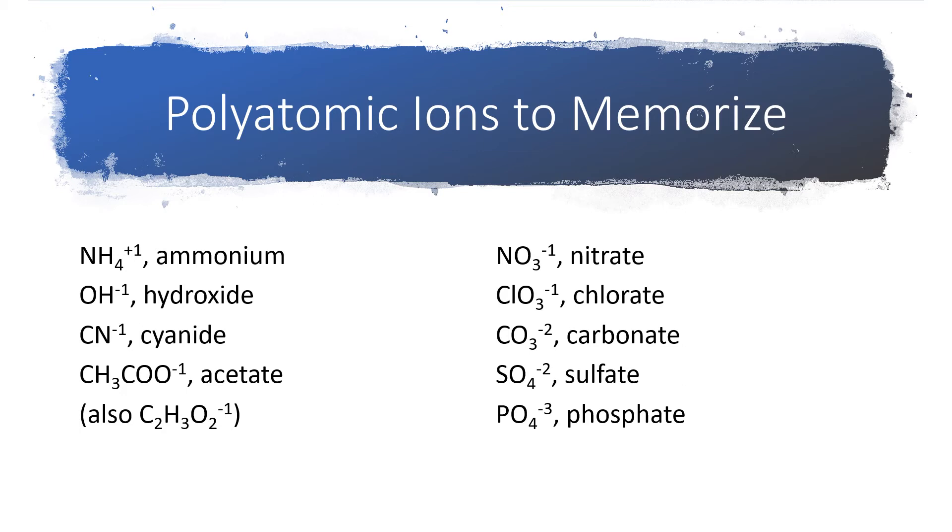But unfortunately, that is not the case. The -ate ion in a family of ions will be the one that chemists encountered most frequently in their labs back when the nomenclature system or the naming system was first being developed. So, with different nonmetals out in front of the oxygen, we ran into the most stable common ion having different numbers of oxygen.